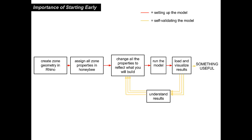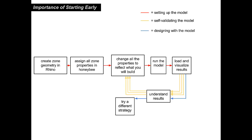You'll probably have to do this several times in the course of your design until finally you get something useful — something that actually represents what you would build and can tell you how much energy it's going to use. You can bring that to a developer and tell them you saved this much money on M&O. But the value from just having an accurate representation of your model isn't nearly as powerful as the value you pull once you're able to go back and actually design with the model, using your understanding of the results to try a different strategy. This becomes a cycle, and it's in this last part that you really pull out a lot of value. Unfortunately, it's a real challenge to get to this final place, but out of it you get a great design that really, really improved your building.